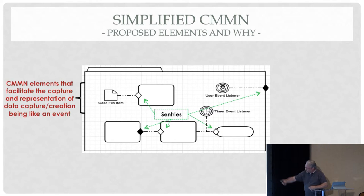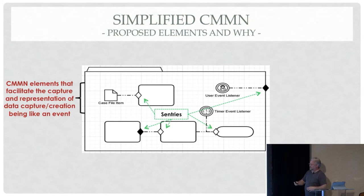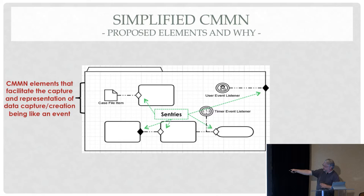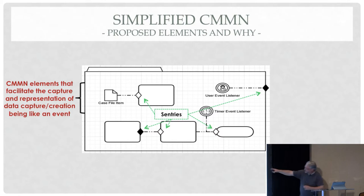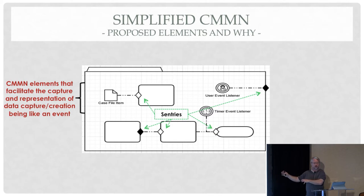So you have a case file item — a data object of some kind — and its arrival, its 'on part,' can have different states: created, updated, and a few others. You can then have a condition attached to the entry criterion — a sentry — and in this model that would say this activity cannot begin until that document has arrived. In effect, data is an event type; it's just not visualized that way in the model. The arrival of data is just another kind of event.